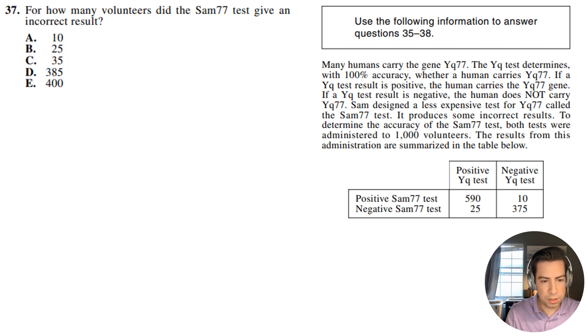Problem 37. For how many volunteers did the SAM77 test give an incorrect result? All right, so what we have to look for is any time there's some discrepancy between the SAM77 and the positive YQ test, that's when the SAM77 was wrong. So we have a negative SAM77 test and a positive YQ. So there's a discrepancy here and there is a discrepancy here. So that is going to be 25.